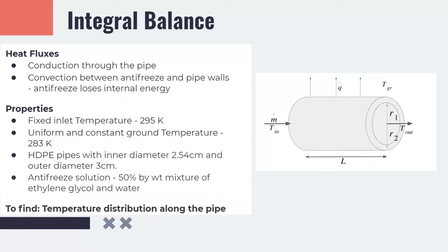We do an integral balance on the system. Here it is ground and vertical loop system. The heat fluxes consist of two components. We have conduction through the pipe and convection between the pipe and the antifreeze solution. Antifreeze solution here loses its internal energy. We have a fixed inlet temperature of 295 Kelvin and a ground temperature of 283 Kelvin. We use high density polyethylene pipes with inner diameter 2.5 cm and outer diameter 3 cm. The antifreeze solution is a 50% by volume mixture of water and ethylene glycol. We plan to find the temperature distribution along the pipe.